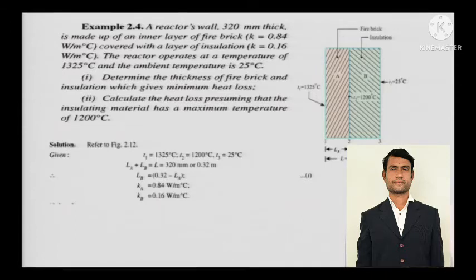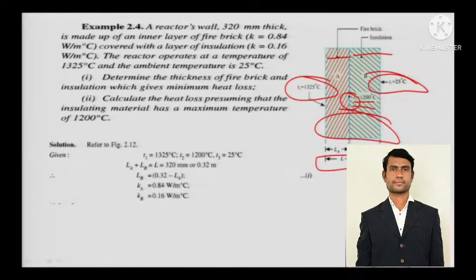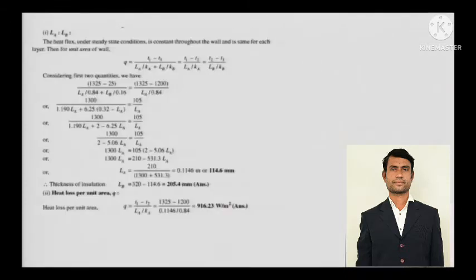There are two layers of the composite wall: one is the fire brick and one is the insulation. This is the temperature here, this is the temperature here, this is the intermediate temperature, and the thickness is shown. You need to determine the thickness of the fire brick and calculate the heat loss, given that the insulating material has a maximum temperature of 1200 degree Celsius.